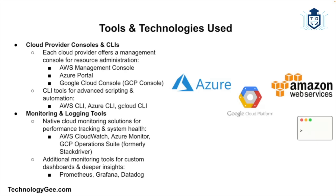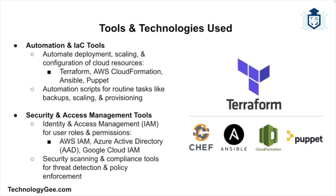Additional monitoring tools such as Prometheus, Grafana, and Datadog can provide deeper insights and customizable dashboards for cloud performance and security. For automation and infrastructure as code, tools like Terraform, CloudFormation, Ansible, and Puppet enable cloud admins to automate the deployment, management, and scaling of cloud resources. Automation scripts can be used for routine tasks such as backup, scaling, and infrastructure provisioning.